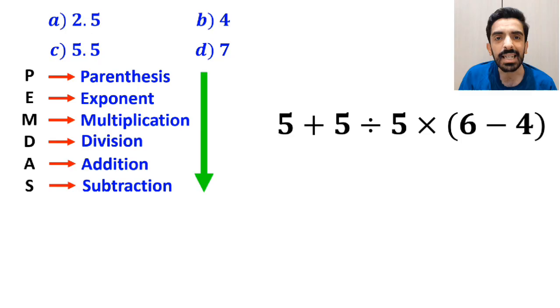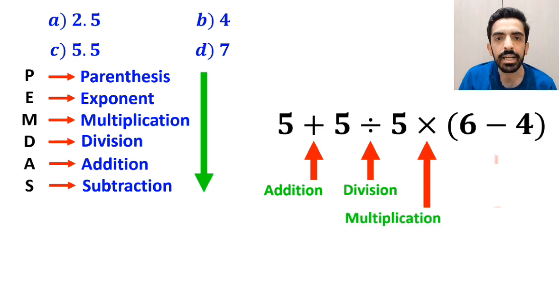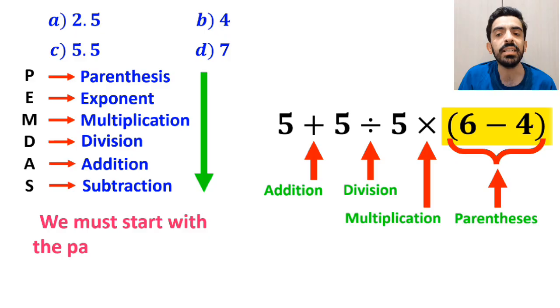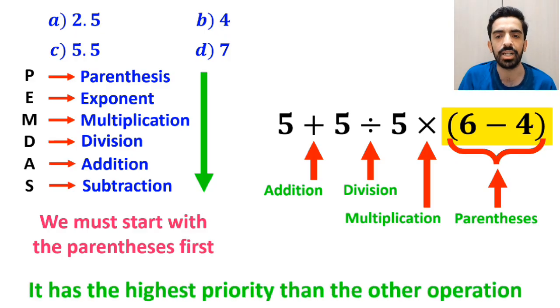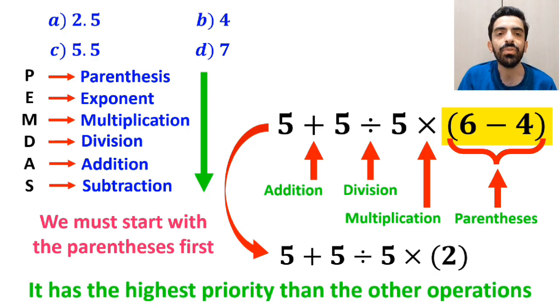Alright, as you can see in the image, in this expression, first we have an addition sign, then a division sign, followed by a multiplication, and finally, parenthesis. We must start with the parenthesis first, because it has the highest priority. So, instead of this expression, we can write 5 plus 5 divided by 5 times 2.